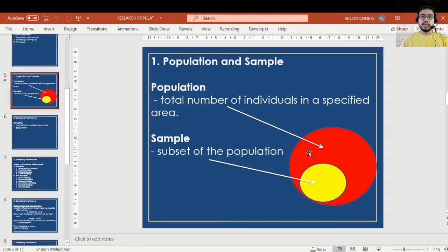If we say population, it is the total number of individuals in a specified area, or the total number of individuals that you are planning to make as participants of your research. While if we say sample, this is just part of a population that must be chosen with particular consideration depending on the nature of your population and the nature of your investigation.